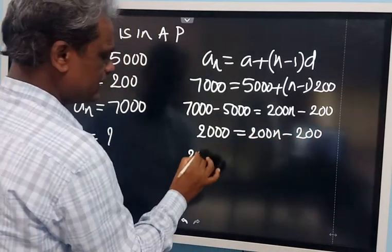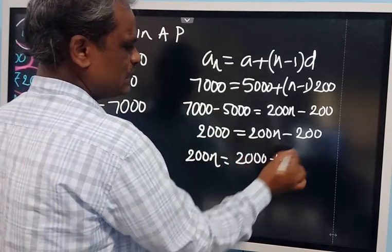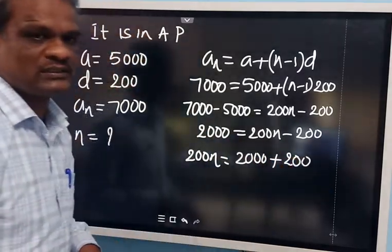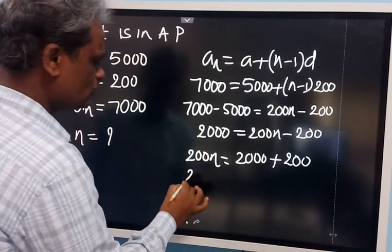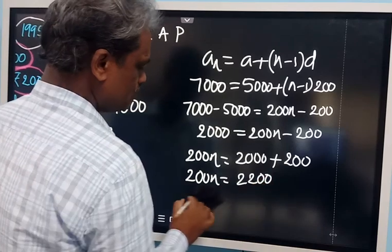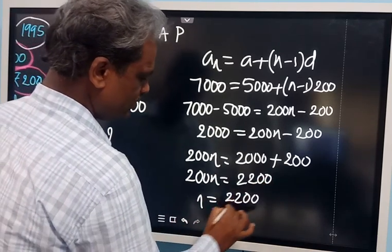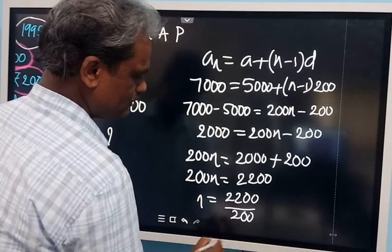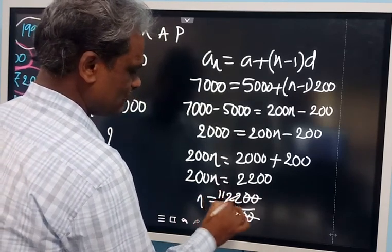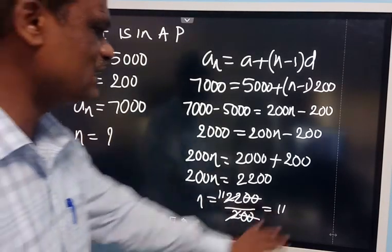So 200N will be equal to 2000 plus 200, which gives 200N equal to 2200. Dividing, N equals 11. So Ubrow gets 7000 in the 11th year.